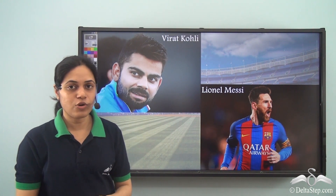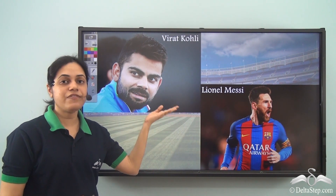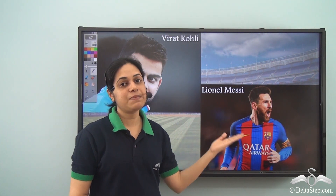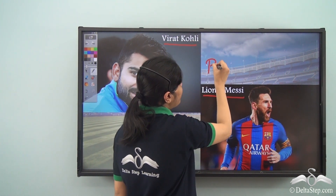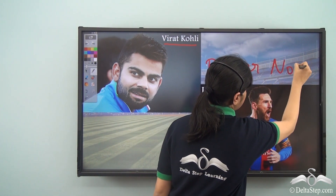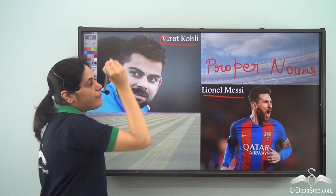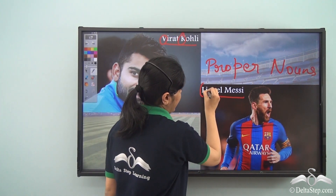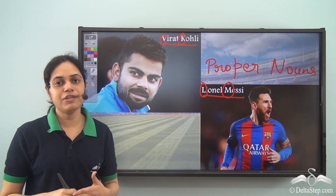So when I say Virat Kohli, I am talking about this specific person or this specific sportsman and no one else. When I say Lionel Messi, I am talking about this specific sportsman. So Virat Kohli and Lionel Messi are proper nouns. As you can see, V and K are written in capitals, and L and M are also capitals, because proper nouns always begin with a capital letter.